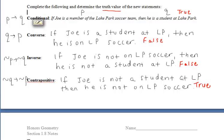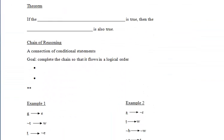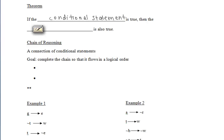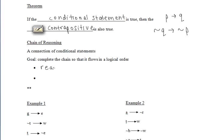One theorem presented in this section states that if the conditional statement is true, then the contrapositive is also true. Referring back to the Joe example, the conditional was true, so the contrapositive was also true. In general: if 'P then Q' is true, then 'if not Q, then not P' is also true.